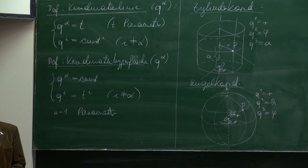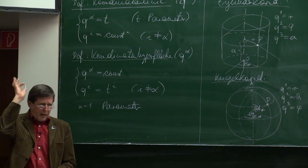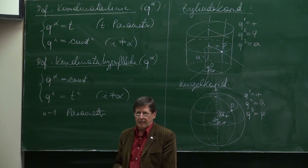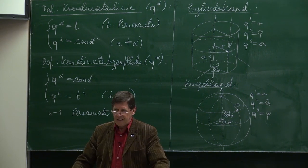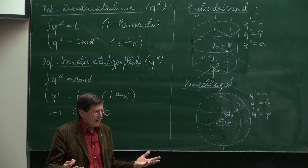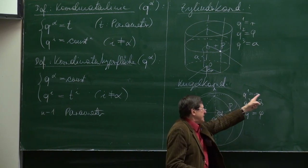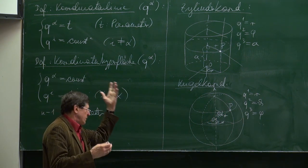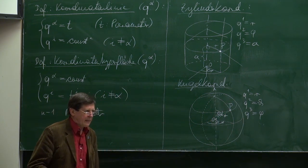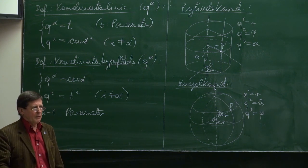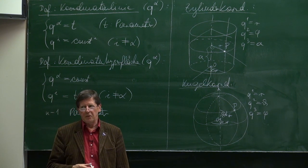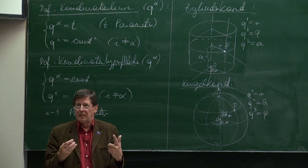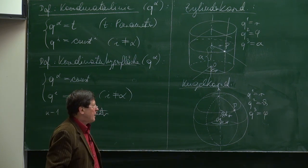Da bin ich oft schon kritisiert worden – manche nennen Q2 Phi und Q3 Theta. Egal. Auf das einigen wir uns: R ist die erste Koordinate. Wenn Ihnen das besser gefällt, können Sie auch R, Phi, Theta machen. Aber man darf nicht durcheinander kommen, das ist schon ein Unterschied. Jetzt schauen wir uns die Koordinatenlinien an.